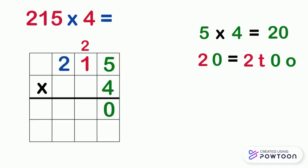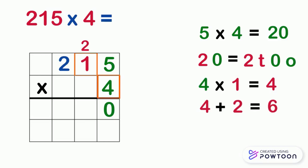Now we will multiply 4 by the 10's digit, which is 1. 4 times 1 equals 4. Then we should add the carry, which is 2, to the answer that we just got, which is 4. 4 plus 2 equals 6. And don't forget to cross the carry in order not to use it again. Similarly, we will write 6 in the 10's place in the answer box.